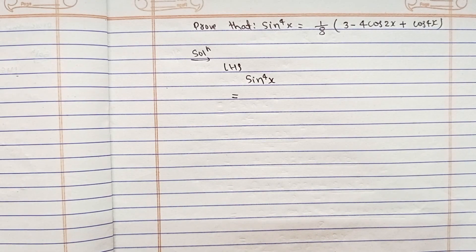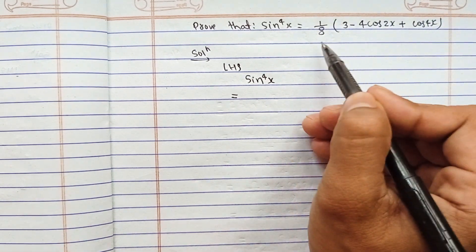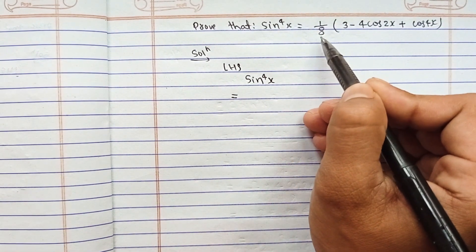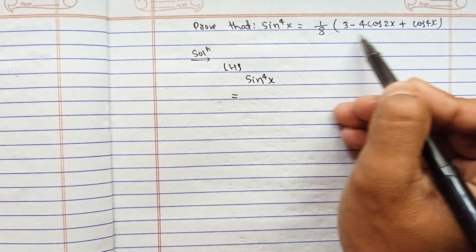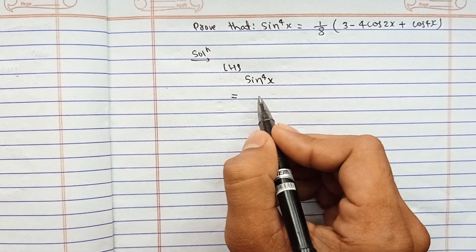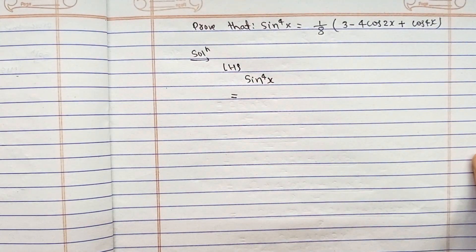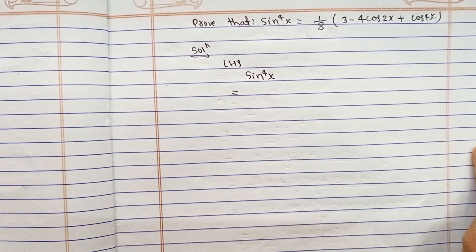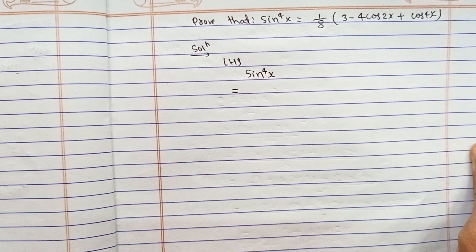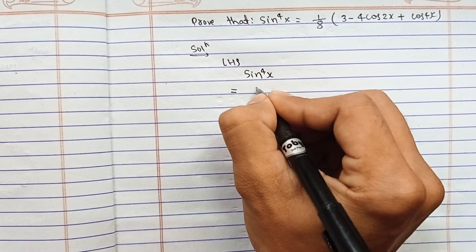Hello everyone, today I got one question from trigonometry and I'm going to prove it. Most of the students take the RHS here, but I prefer to take the LHS because it is more easier from the LHS to prove it. If it is given sine to the power 4x...